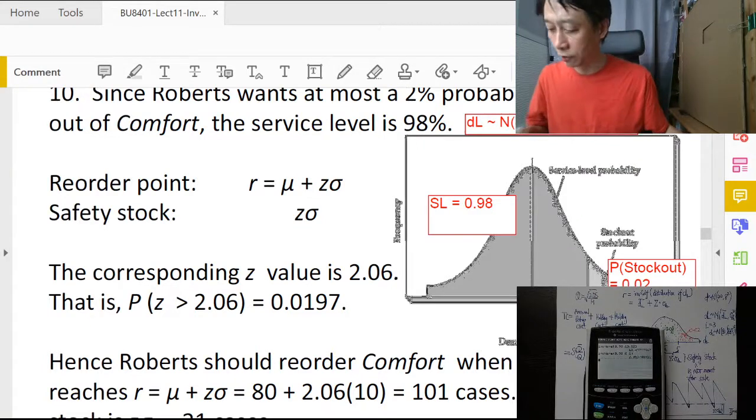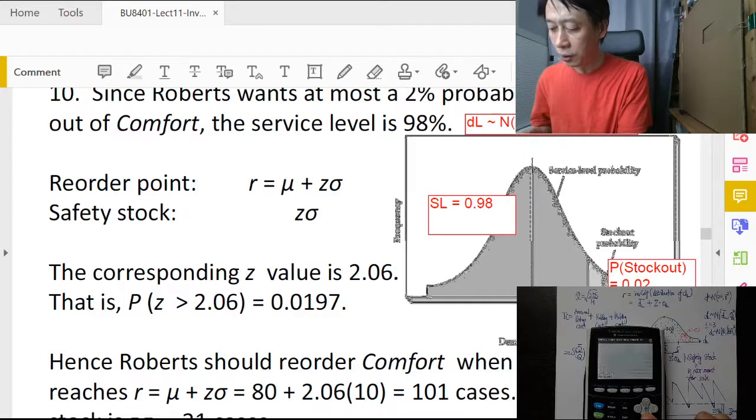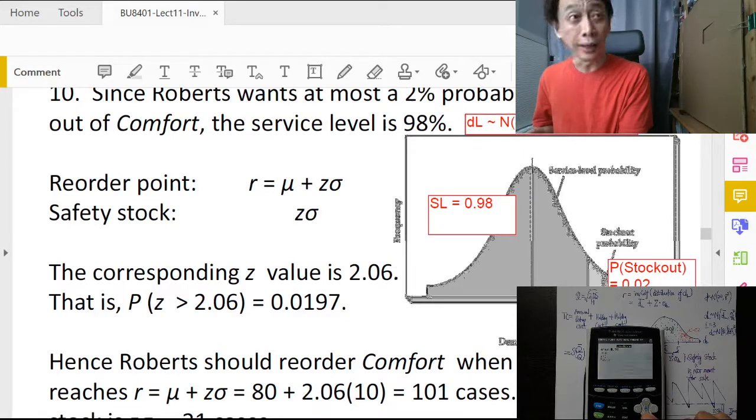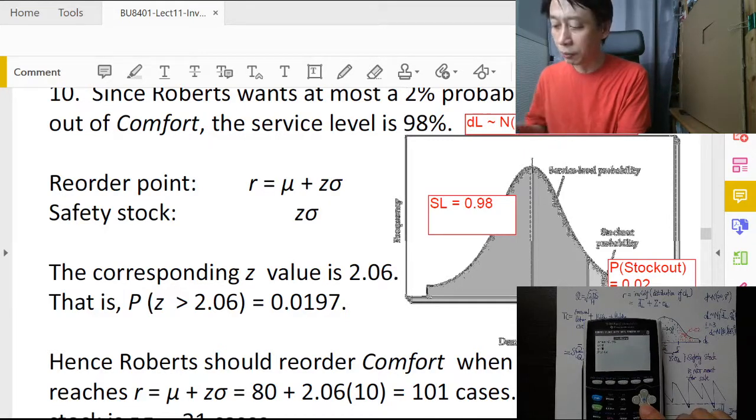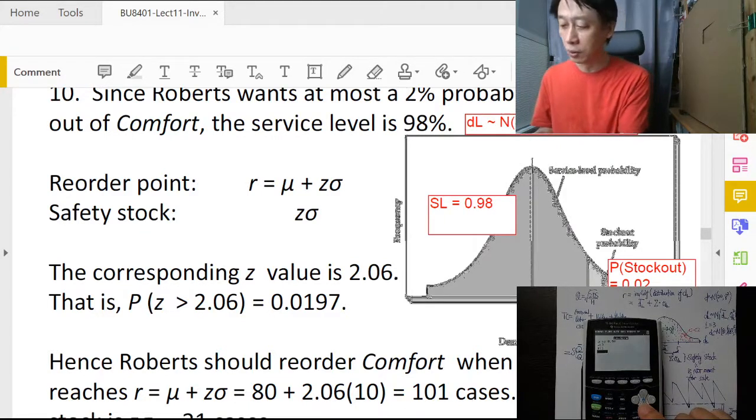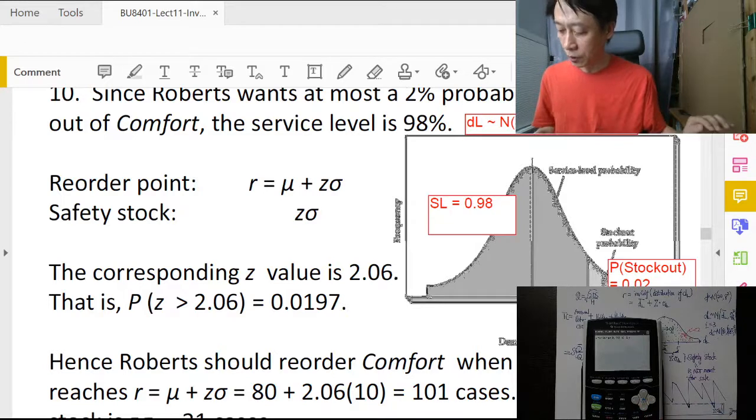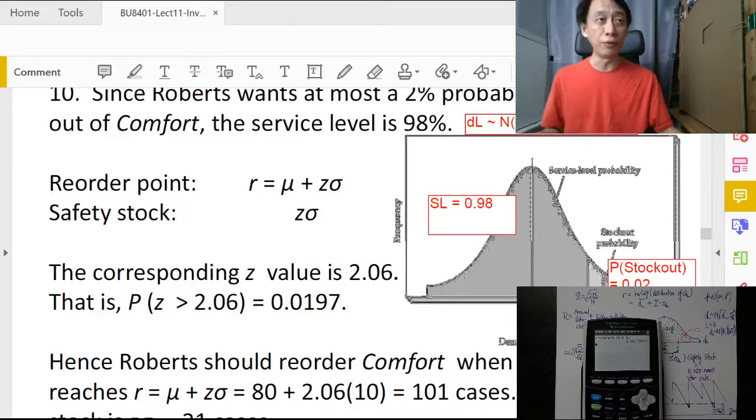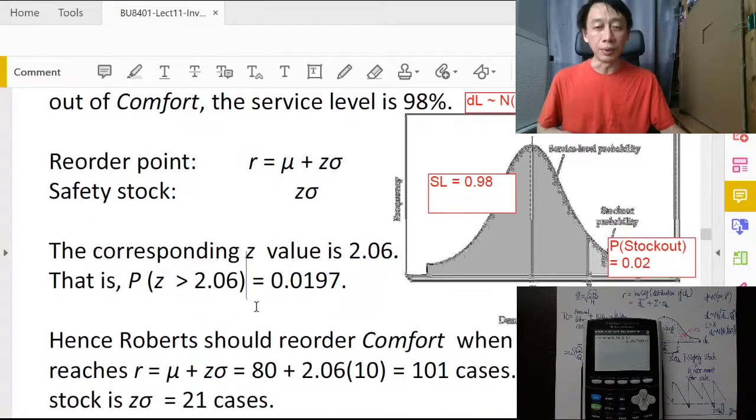Let's look at our Z value. Our Z value is going to be shown by inverse norm of 0.98 as before, with a zero mean and standard deviation one because that's the standard normal distribution. So with this we get 2.0537. From the table we get 2.06, that's fine, let's follow 2.06.